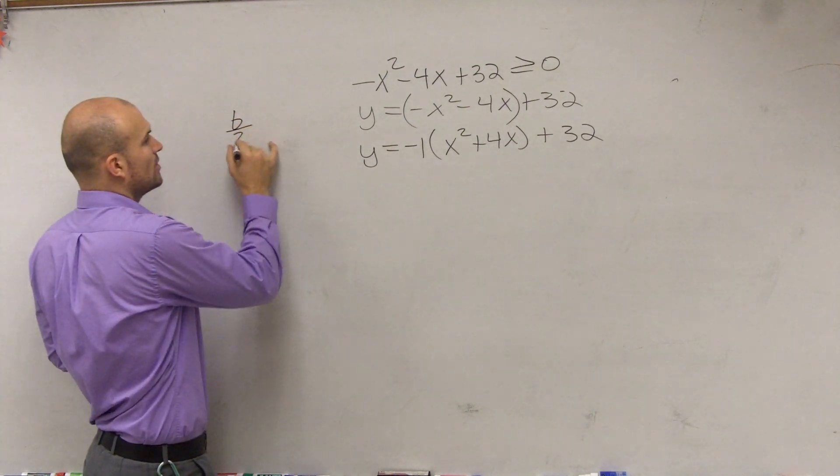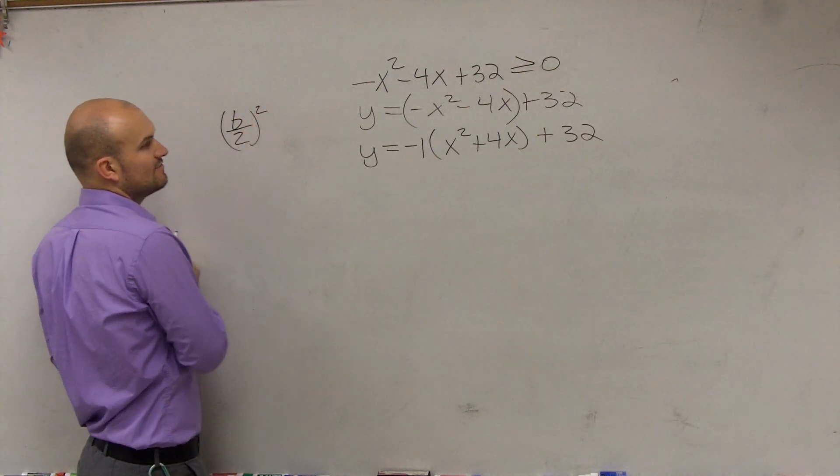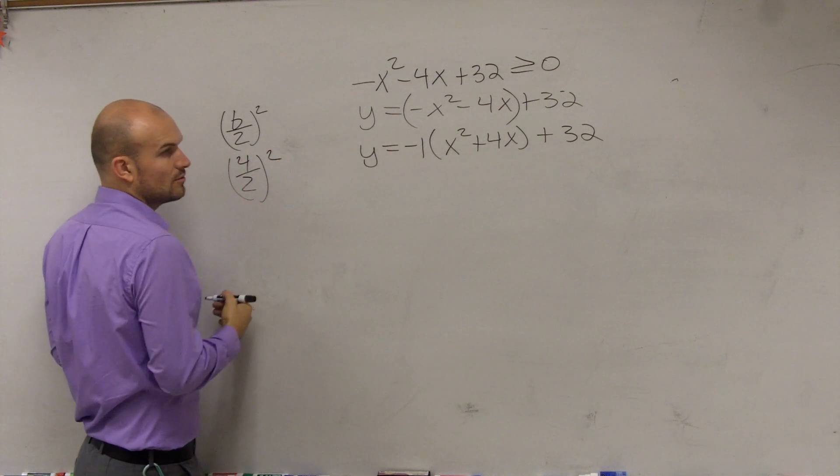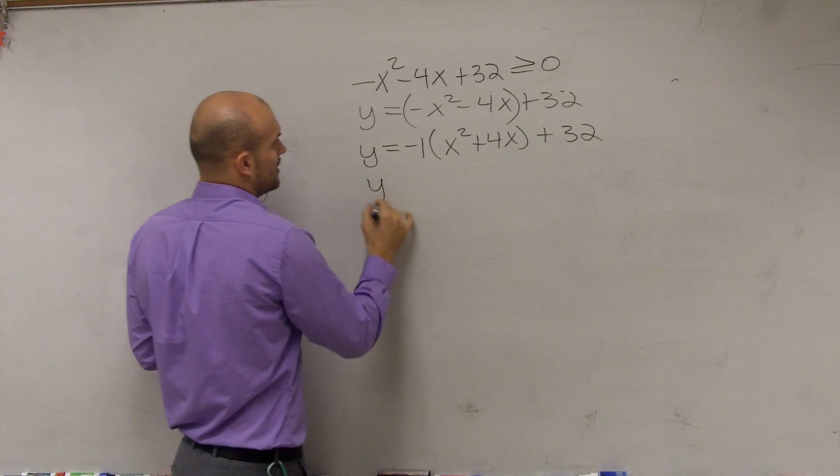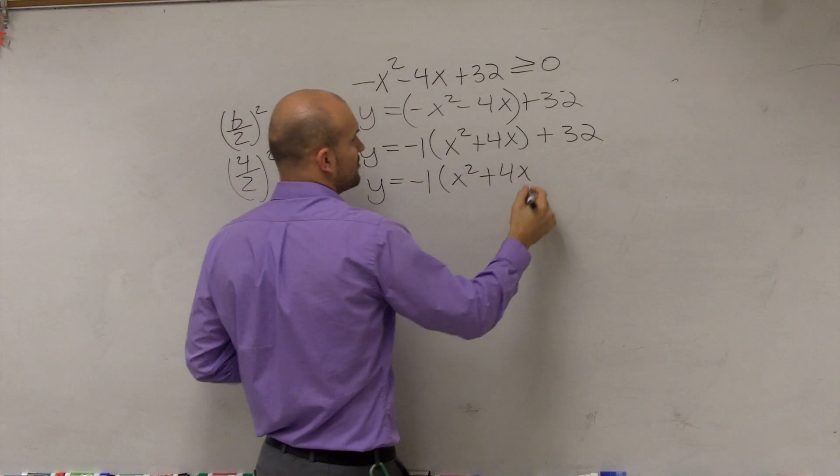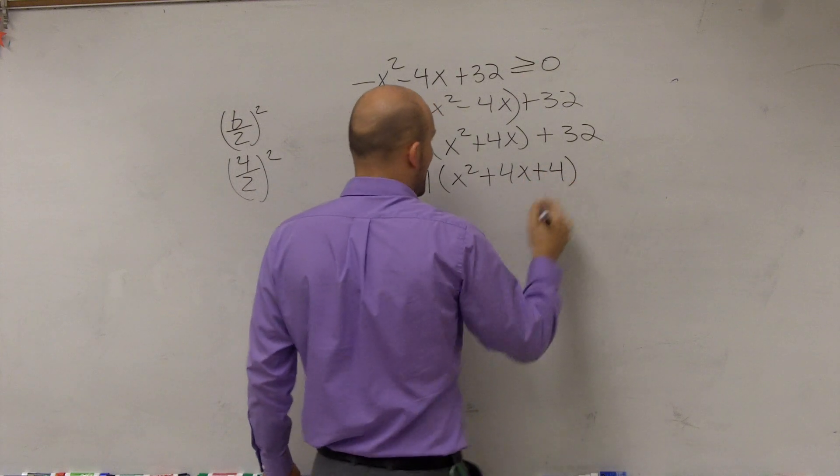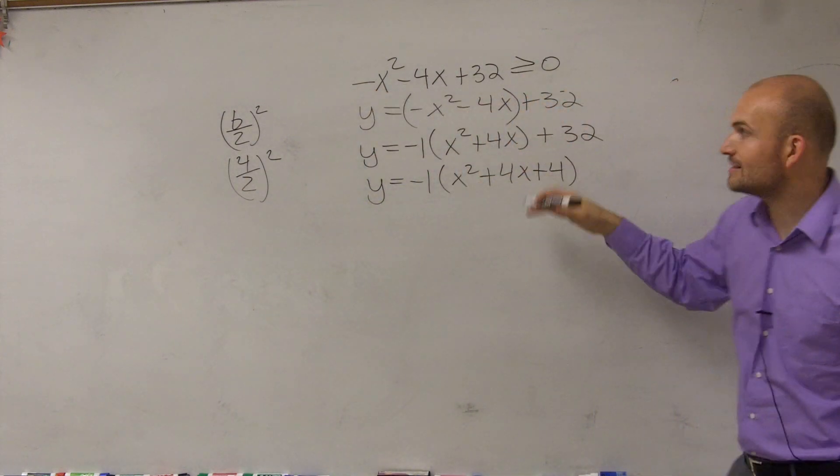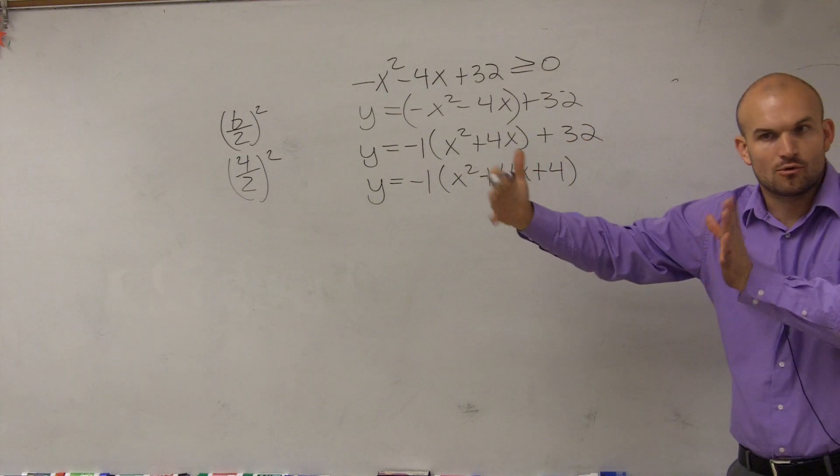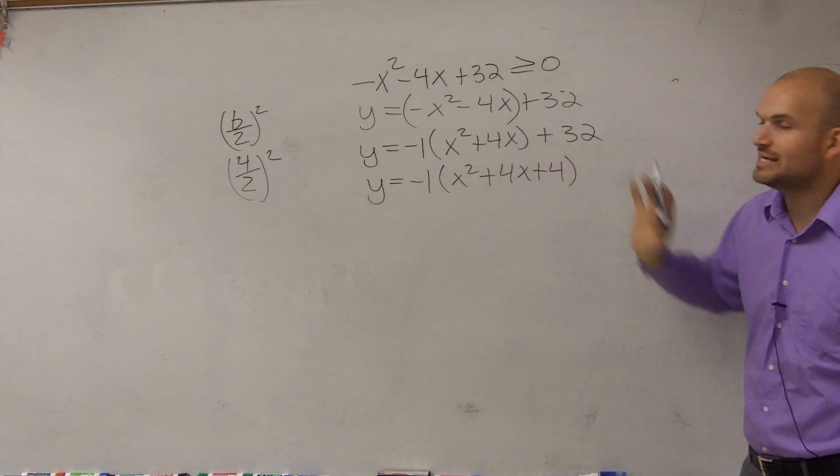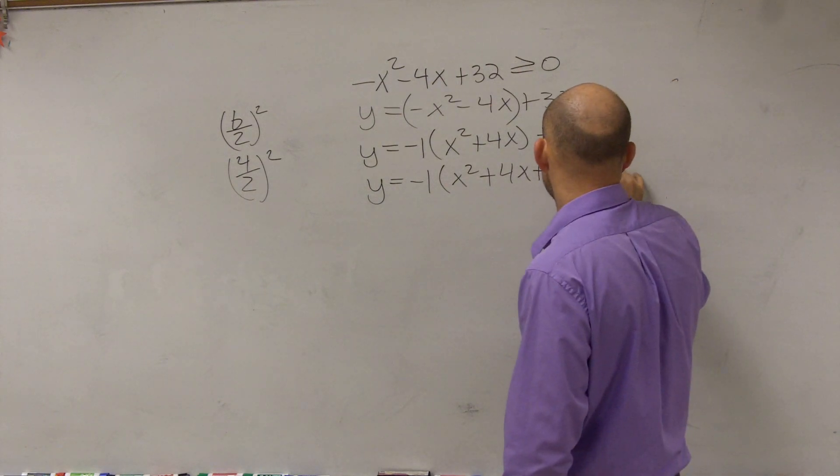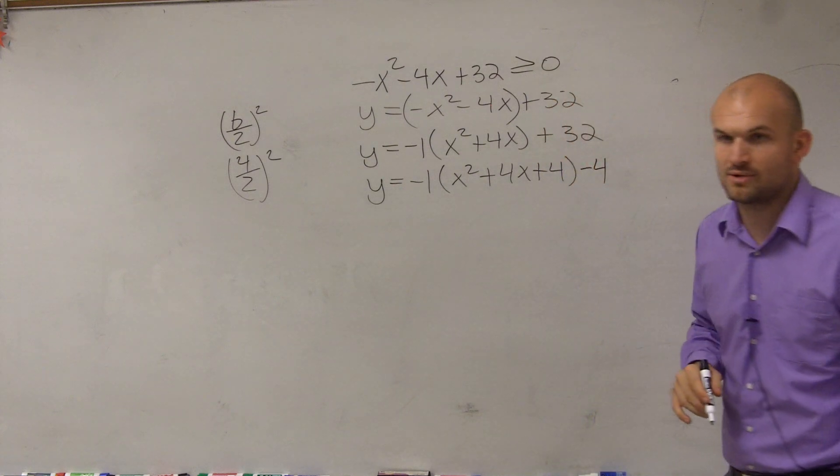So again, I follow my form for completing the square. b divided by 2 squared, 4 divided by 2 squared, which is equal to 4. Now, remember, when we were solving by completing the square, we added it to both sides of the equation. But now, I want to keep everything on the same side, because I want to have y equals an equation. So I'm going to keep everything on the same side. So to keep this equation true, if I add 4 to one side, I have to make sure I subtract 4 on one side.